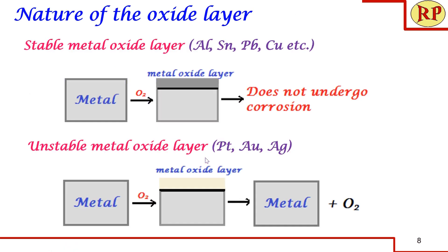Now we look into the nature of the oxide layer. First is the stable metal oxide layer. When the metal is in contact with atmospheric oxygen, it forms a metal oxide layer that is very firm, adherent, and densely packed. We call it a stable layer because it acts as a protective layer and does not allow atmospheric oxygen to come in contact with the metal. So the metal will definitely not undergo further corrosion. This occurs in metals like aluminium, tin, lead, copper, etc.